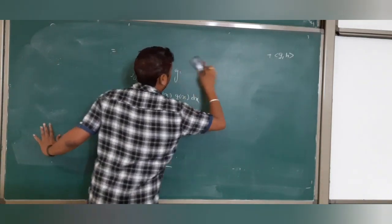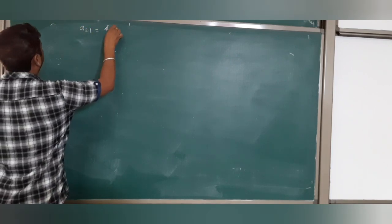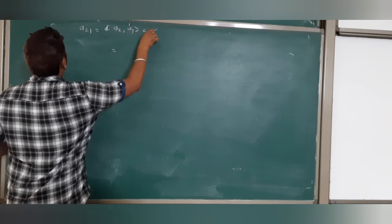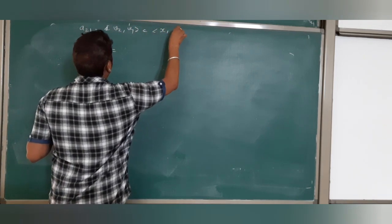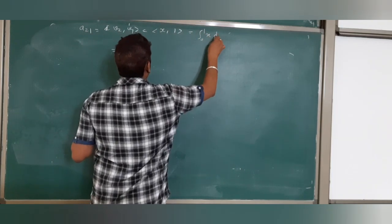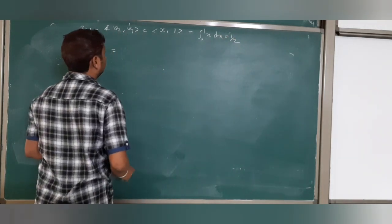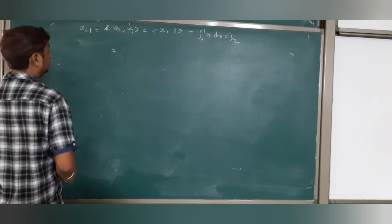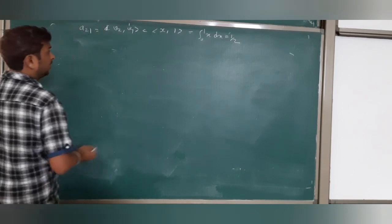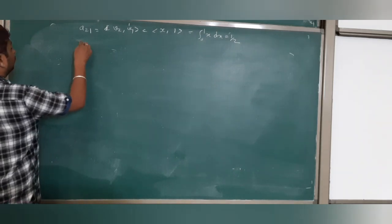Check: what is a₂₁? Same, you can easily check. a₂₁ is v₂ with v₁, which is x with 1. The inner product is integral 0 to 1 of x dx, which is 1/2 only. So you see, same, that is why it is symmetric matrix.